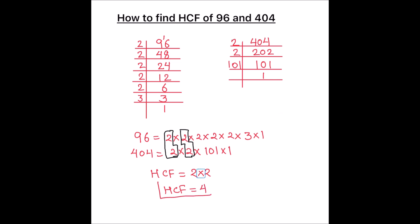So the HCF of 96 and 404 is 4. This is how we can find the HCF of any number easily by using the prime factorization method. I hope this video is helpful to you. If you like the video, please hit the like button and subscribe to my channel for more math videos. Thanks for watching.